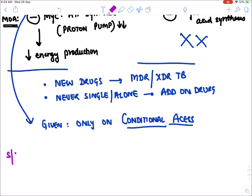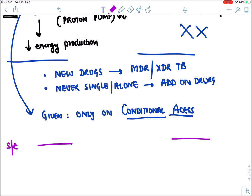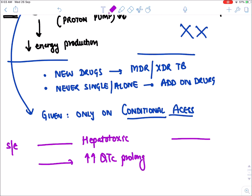Side effects of bedaquiline and delamanid: both are hepatotoxic (liver enzymes will be raised), and both cause arrhythmia due to QT prolongation on ECG.